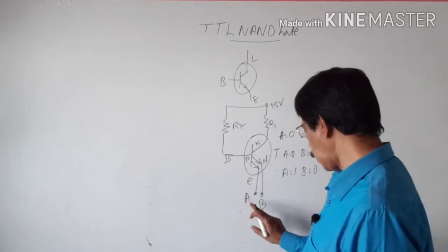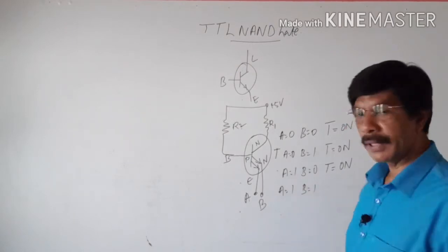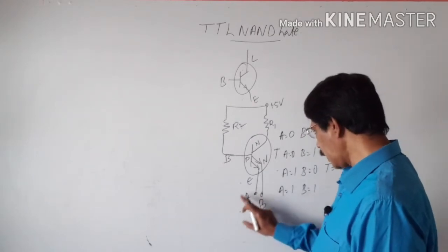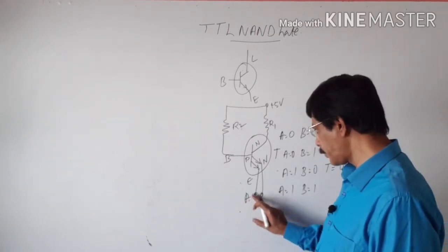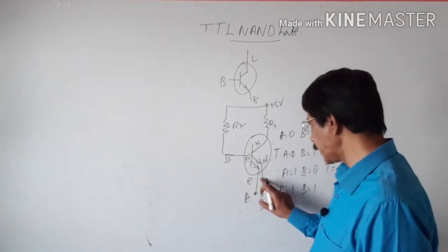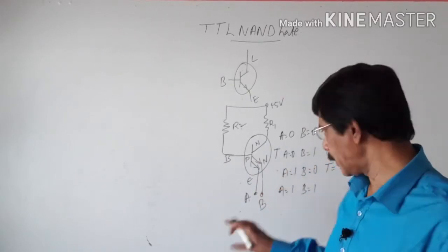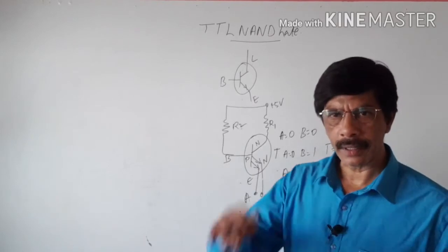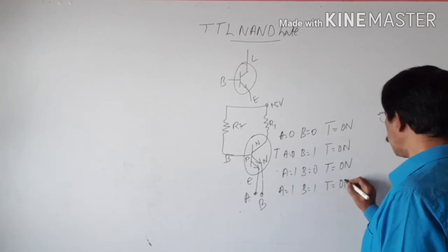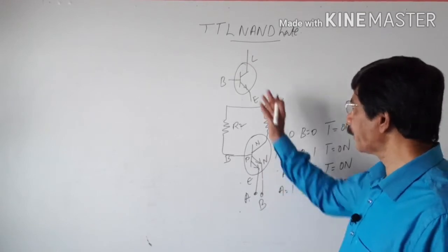The last case: A=1, B=1 — positive voltage is given to both A and B. Because of this positive voltage, the base-emitter junction of transistor T is reverse biased and it is switched off. The transistor is in the cutoff or off position. This is the concept of the multiple emitter transistor.